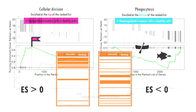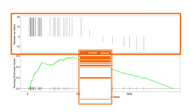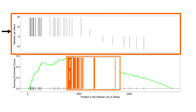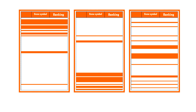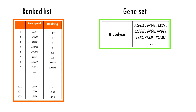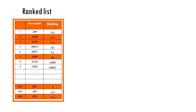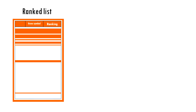The upper part of the plot shows where the members of the gene set appear in the ranked list of genes. Each bar is basically a gene, so it's a nice visual way of identifying where the genes of that pathway fall in our ranked list — whether they fall more towards the top, towards the bottom, or are evenly distributed. For example, if we were testing the gene set glycolysis, it would tell us where the genes for glucose isomerase, glucose phosphatase, and so on are in our ranked list.